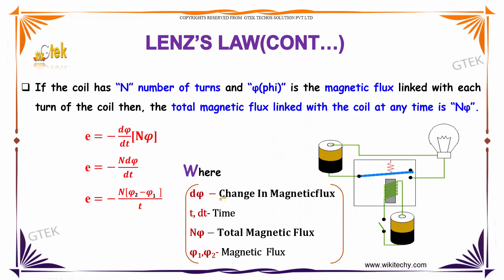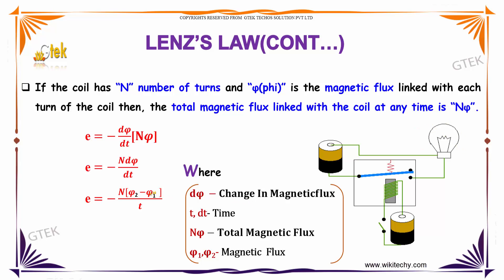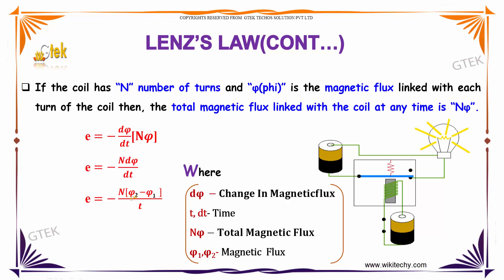So, if there is a variation of magnetic flux, which is given by phi1 and phi2, the induced EMF e is equal to minus of n into (phi2 minus phi1) divided by t.